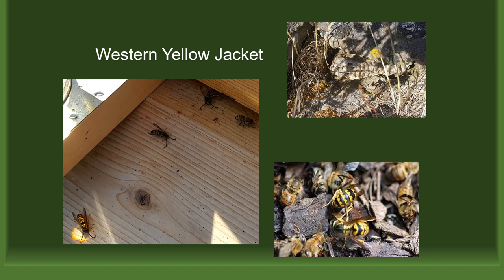You will often see a few yellow jackets on the ground under the entrance of the hive, and this relationship can be beneficial. However, in late summer and early fall they are looking for as much protein as they can to feed their brood and will take over even the strongest hive relatively quickly. The photo at the top right shows the entrance to a nest under a rock. The nest is much larger than what can be seen, is well camouflaged, and any disturbance near the nest will cause a massive attack.